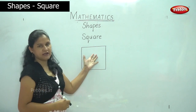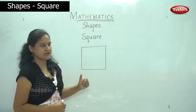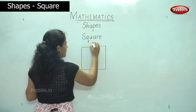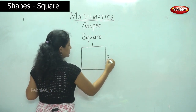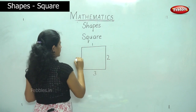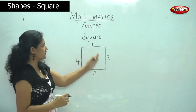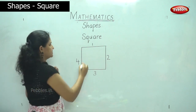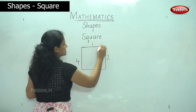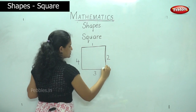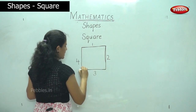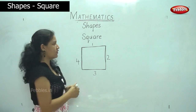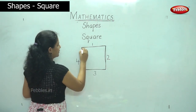So in a square, we find that it has four sides — one, two, three, and four. So all these four sides of a square are equal — it is of equal length. So this is the first line, two, three, and four. It has equal length and all the corners are also equal.